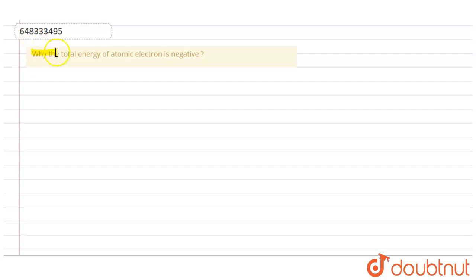Hello students, see the question has been given: why is the total energy of atomic electron negative? So we have to explain why the total energy of an electron, not in an isolated condition but in an atomic model, is zero - how we can explain it.